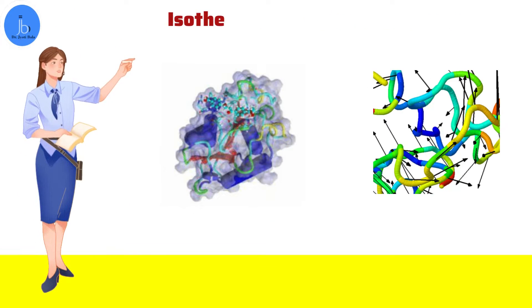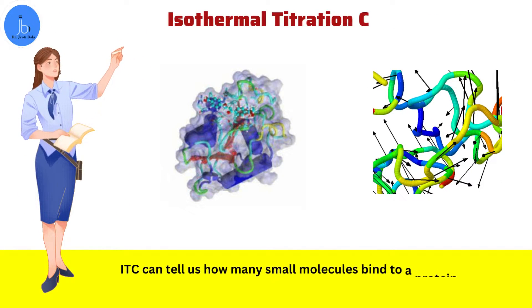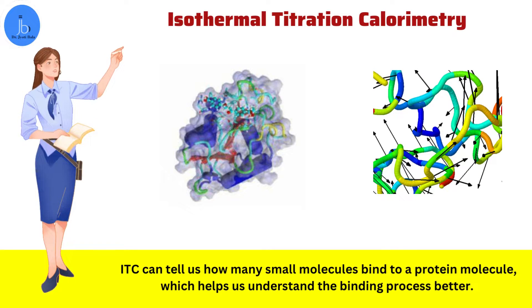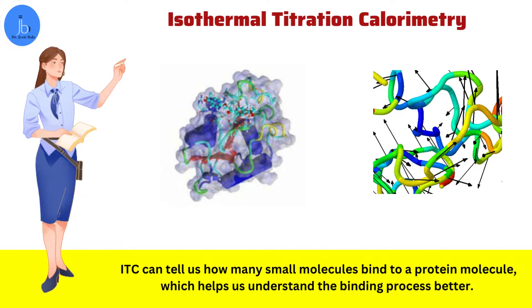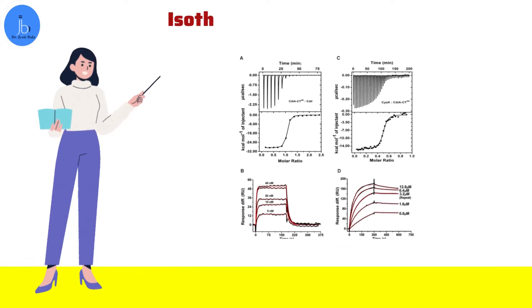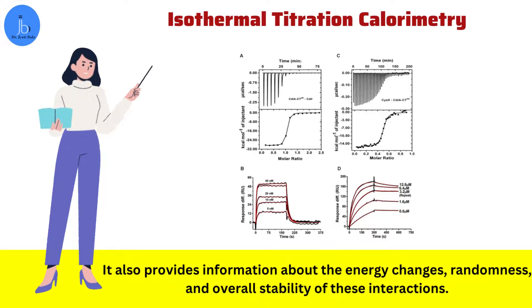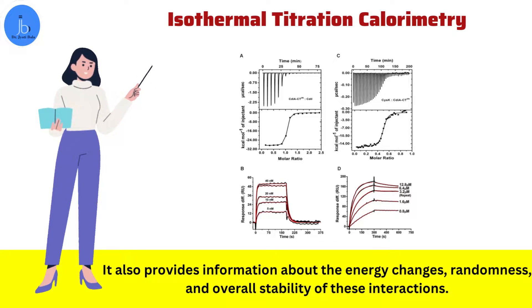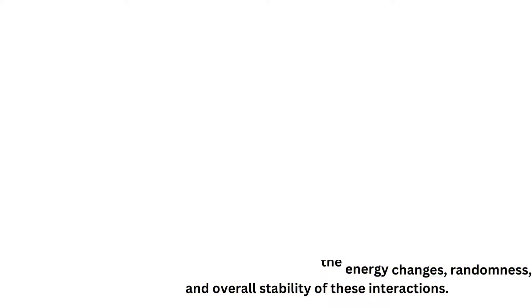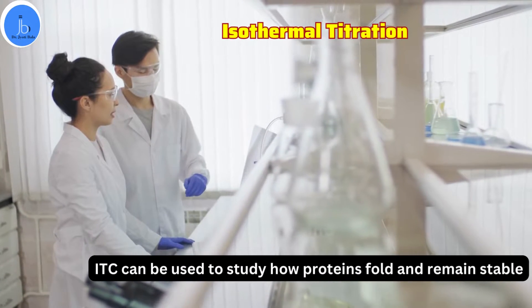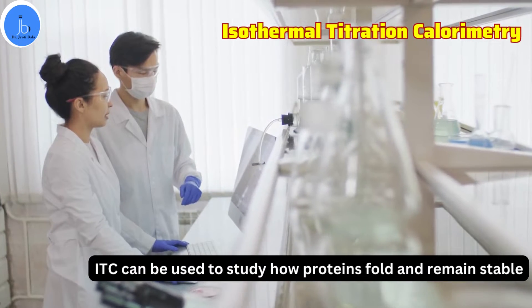Additionally, ITC can tell us how many small molecules bind to a protein molecule, which helps us to understand the binding process better. It also provides information about the energy changes, randomness, and overall stability of these interactions. Moreover, ITC can be used to study how a protein folds and remains stable, helping us to understand the stability of proteins.